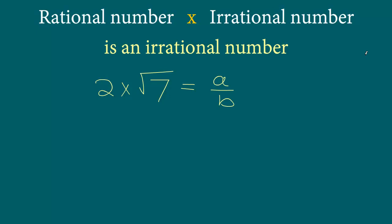Our goal in these types of questions is to separate the square root term all by itself on the left hand side. So on the left hand side we want to have square root 7, and that means we are going to take the 2 to the other side. So we are going to say square root 7 will be equal to a divided by 2b.